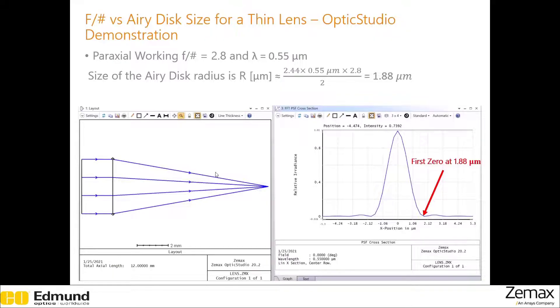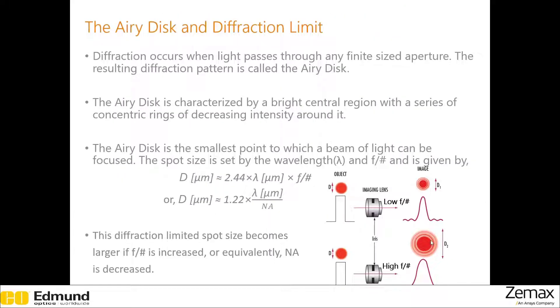If you remember how this Airy pattern looks, you will notice that there are concentric rings around a bright central spot. That means if you want to know the size of the bright central spot, you will need to measure the distance from the center of the bright spot to the edge where the intensity goes down to zero for the first time.